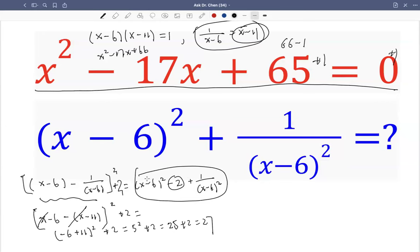This equals 27. All right. So how did we approach this question? Basically, we need to construct from the given equation somehow to construct x minus 6 or 1 over x minus 6 term. Thank you very much for viewing this question.